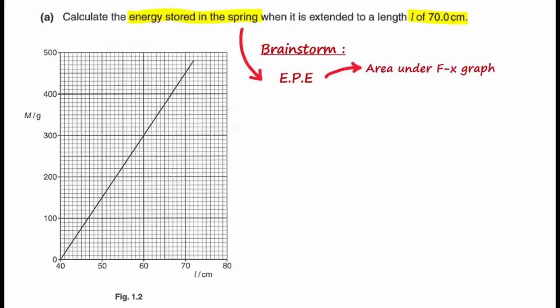First, we can find elastic potential energy from the area under a force versus extension graph. Second, if the spring obeys Hooke's law, we can calculate EPE using half kx² or half Fx, where x is the extension. For this question, we shall use all the methods to illustrate how to determine the energy stored.